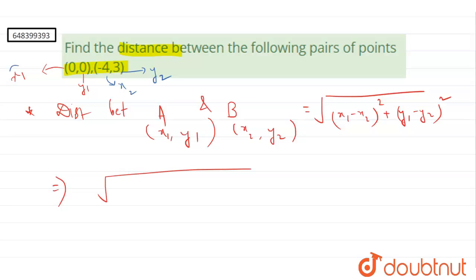putting this data in the formula, x1 minus x2 will be 0 minus of minus 4 whole square. And then, y1 minus y2 will be 0 minus 3 whole square.